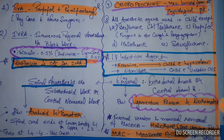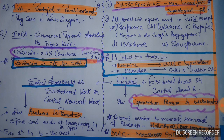MAC — Minimum Alveolar Concentration — measures the potency of the drug. Thiopentone is known as the 'truth serum'; the dose is 3 to 5 mg/kg and it is a very potent drug. The potency of a drug depends upon its lipid solubility.